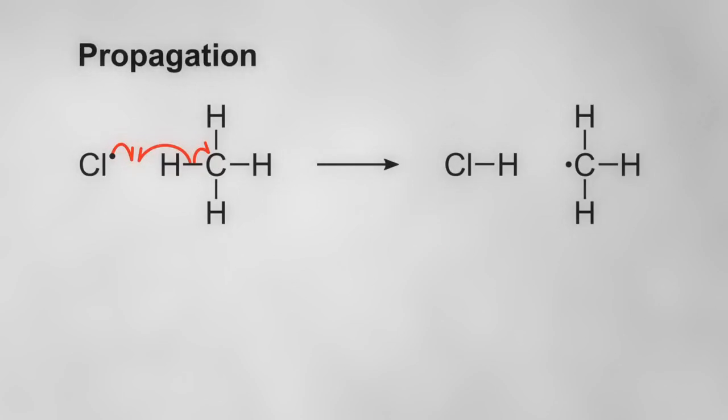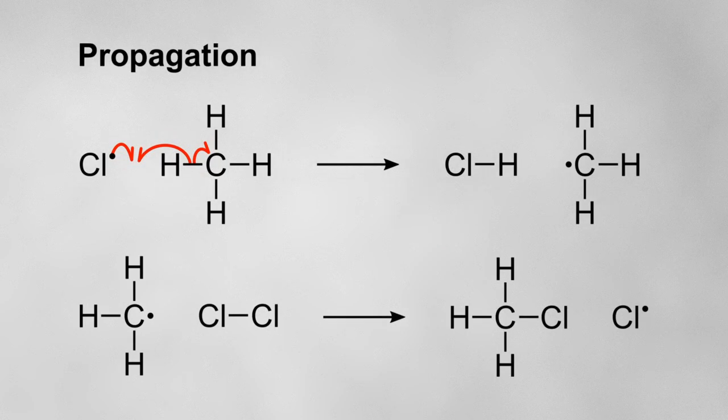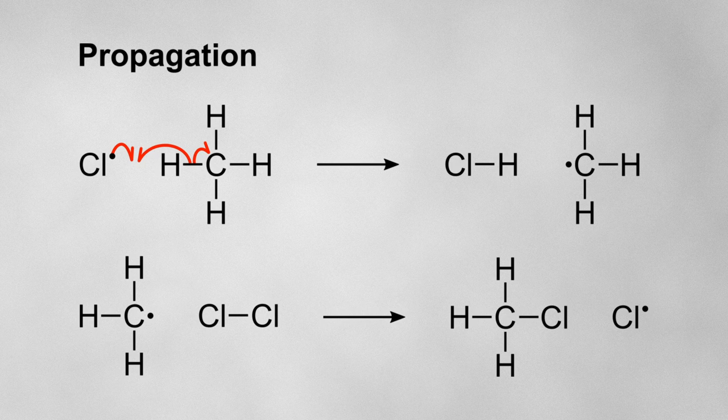If you're finding this a bit difficult to understand, a ball-and-stick model of this reaction shows what's going on a bit more clearly. The curly arrow mechanism for when the methyl radical reacts with a chlorine molecule to form chloromethane and a chlorine radical will look very similar.